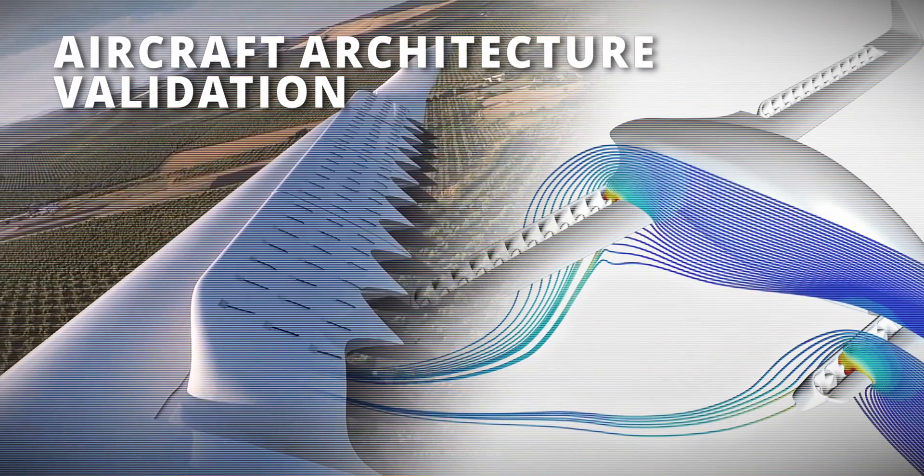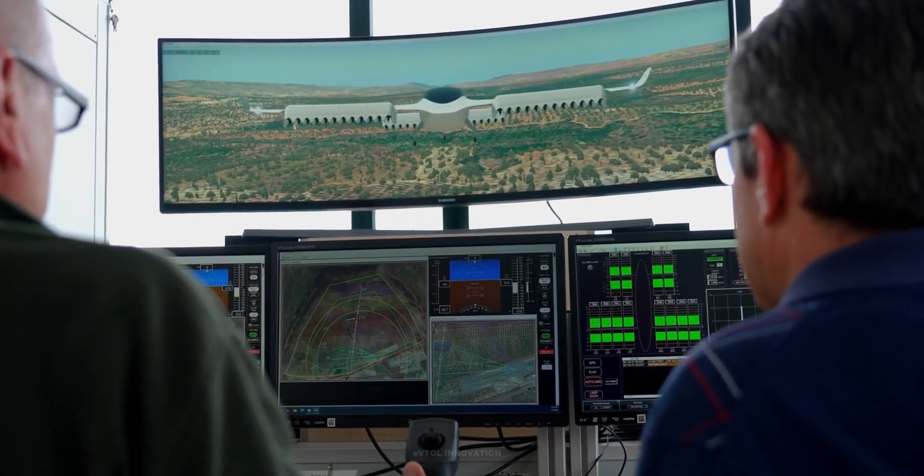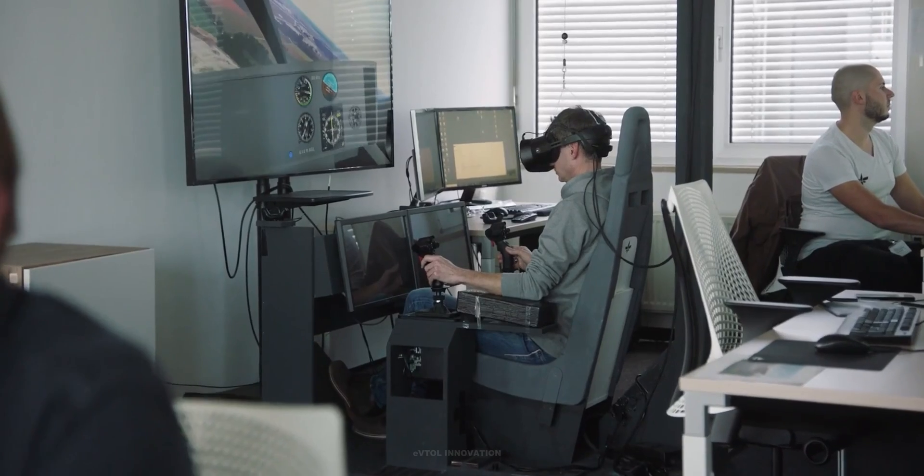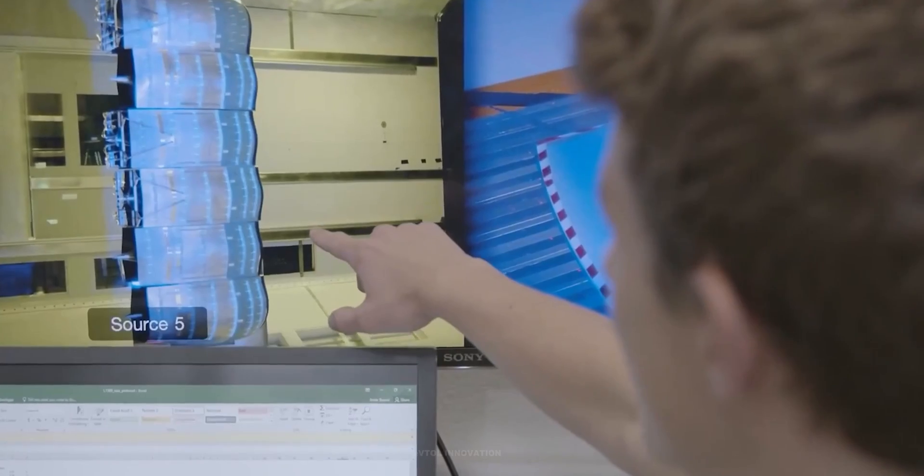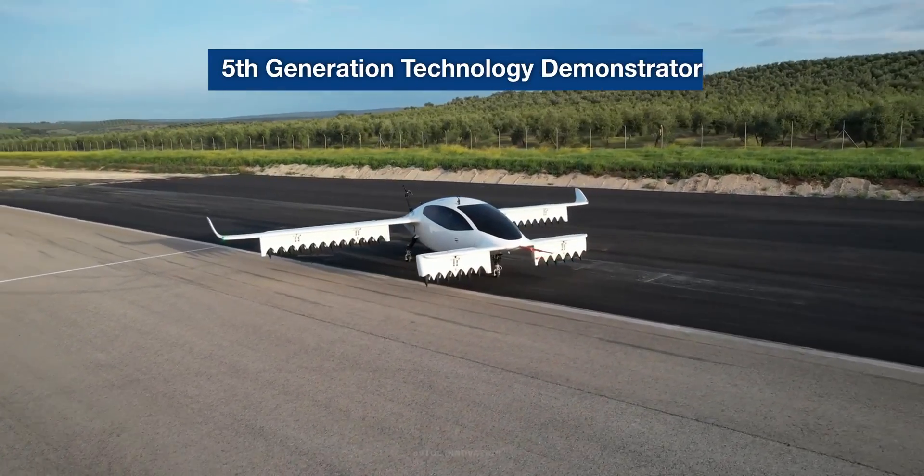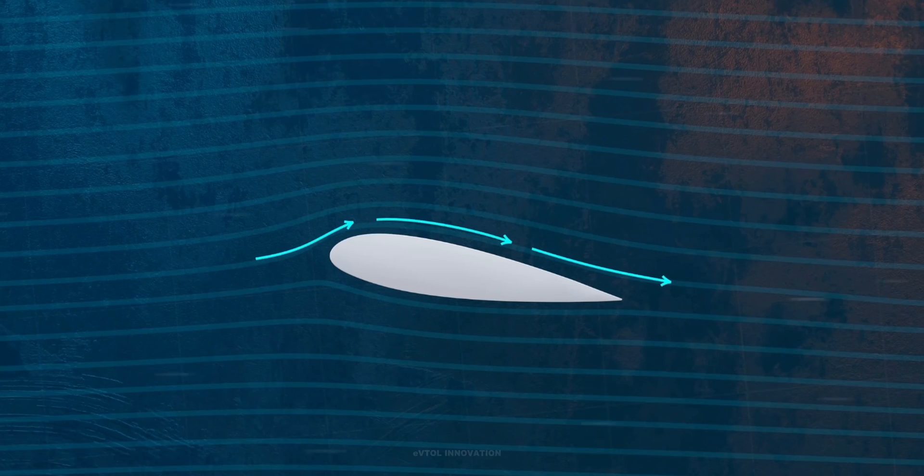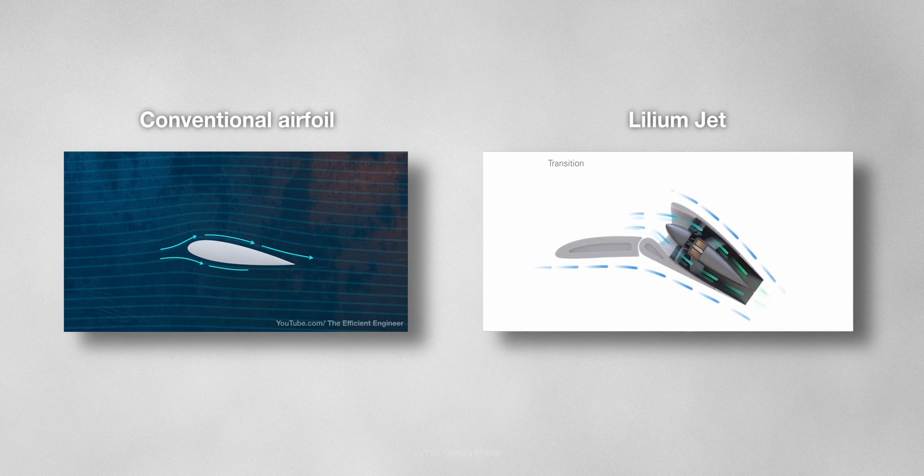These improvements, while making the whole aircraft behave better and fly more efficiently, are only possible by the use of computational tools that simulate real flight conditions. The results are calibrated and validated by wind tunnel testing and real-world flight tests. One of the main concerns about the Lilium jet architecture has always been the aircraft's ability to achieve flow attachment, as the electric ducted fans are integrated into the rear of the wings.